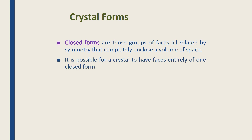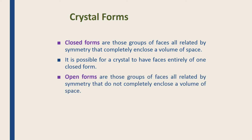It is possible for a crystal to have faces entirely of one closed form. For example, a cube has six faces and all of them enclose a volume of space — they don't need any other elements to close. We call this a closed form. Open forms are groups of faces related by symmetry that don't completely enclose a volume of space.